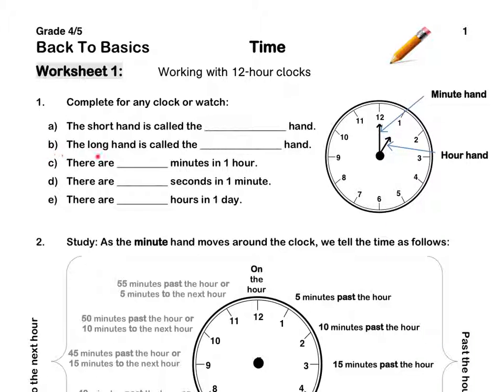B. The long hand is called the minute hand. The long hand tells us how many minutes past the hour it is.